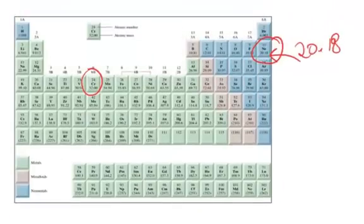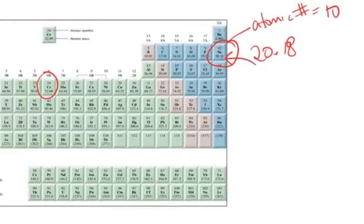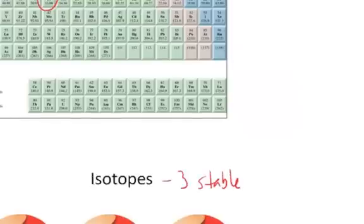The information we get for neon off the periodic table is that its atomic number is 10, that is, the number of protons in the nucleus is 10. That's the little number above the symbol. And the other information we get is the atomic mass, which is 20.18.